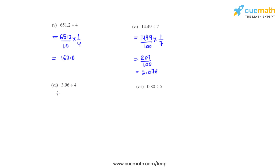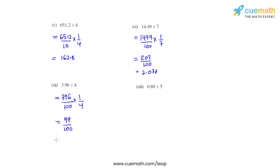Coming to the seventh bit, we have 3.96 which is to be divided by 4. We write 3.96 as 396 divided by 100. Division is replaced with a multiplication sign and the reciprocal of 4 is 1 over 4. Now 396 on division by 4 gives us 99, which is to be divided by 100, so our final answer is 0.99 for the seventh bit.